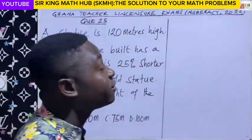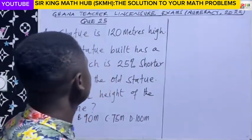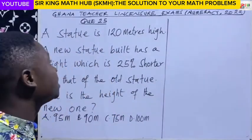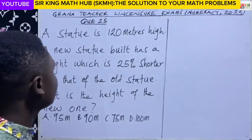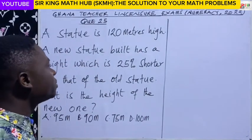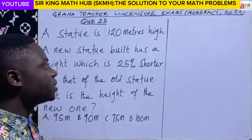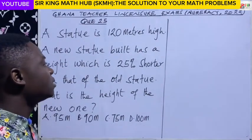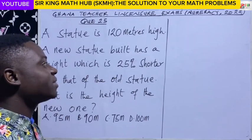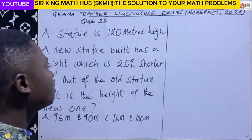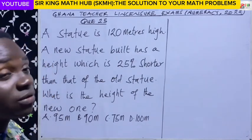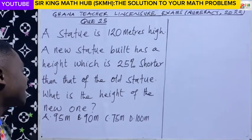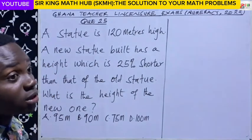Now question 25. A statue is 120 meters high. A new statue built has a height which is 25% shorter than that of the old statue. What is the height of the new one?